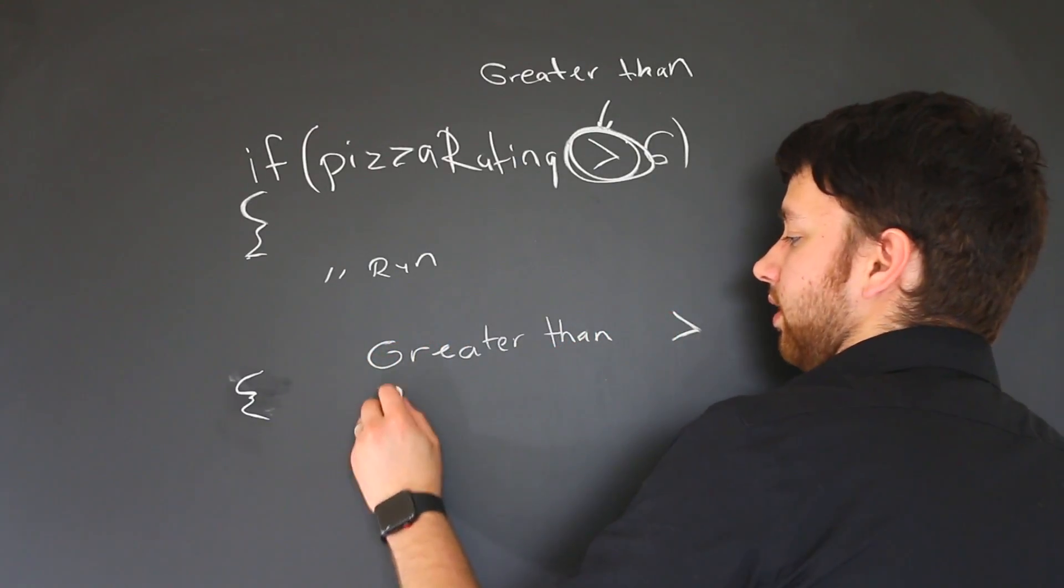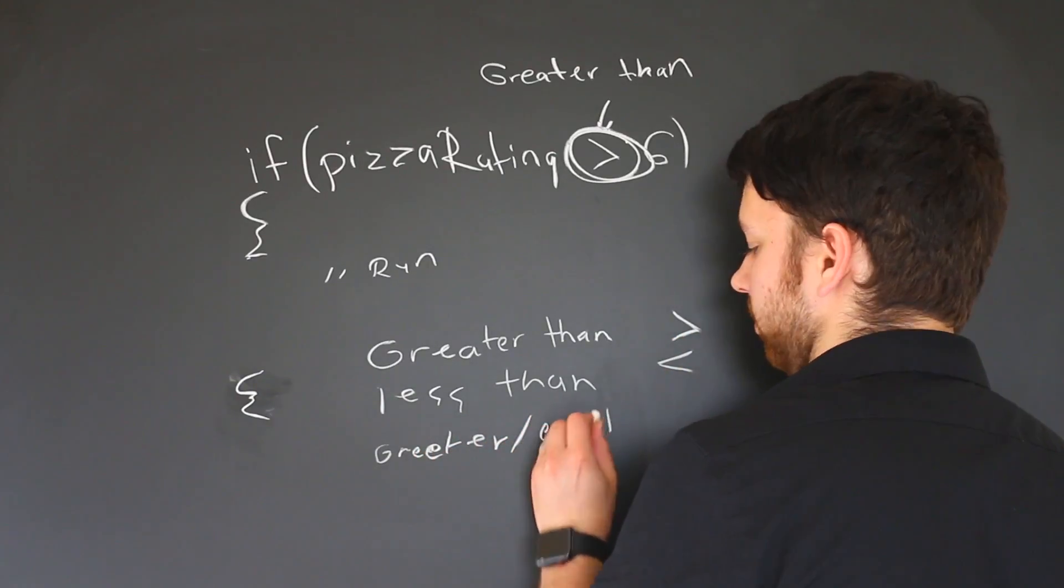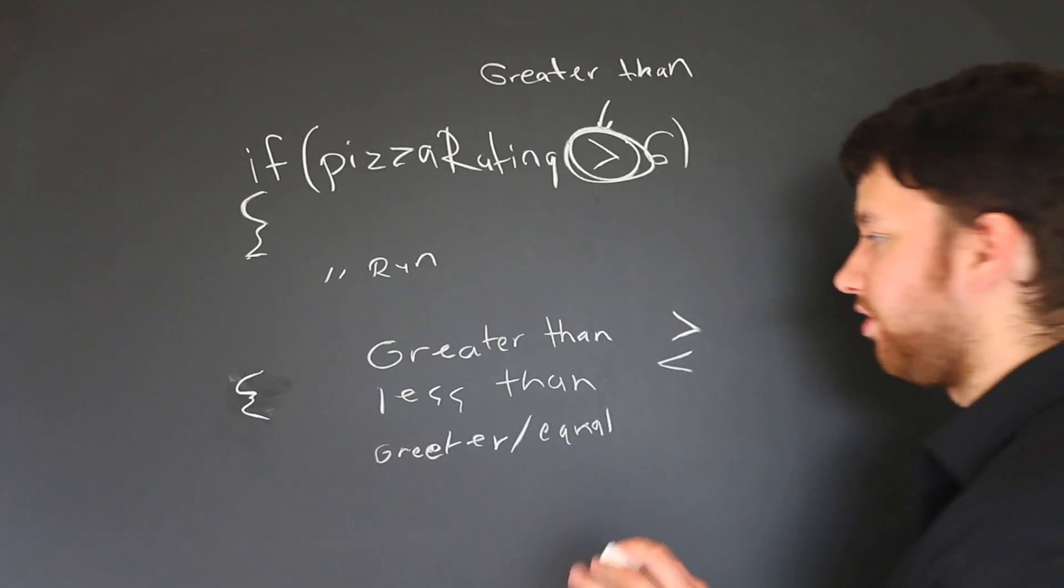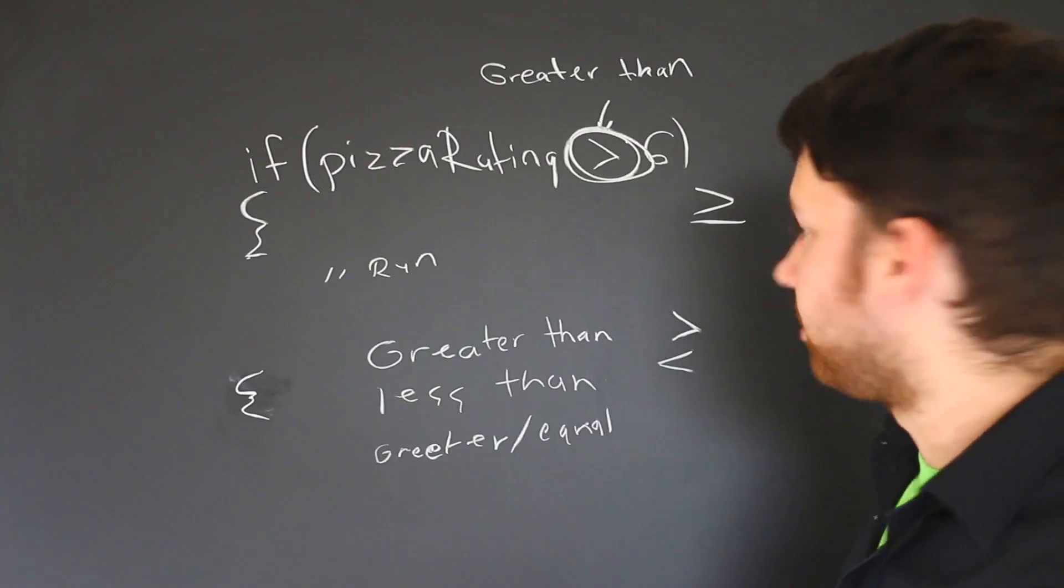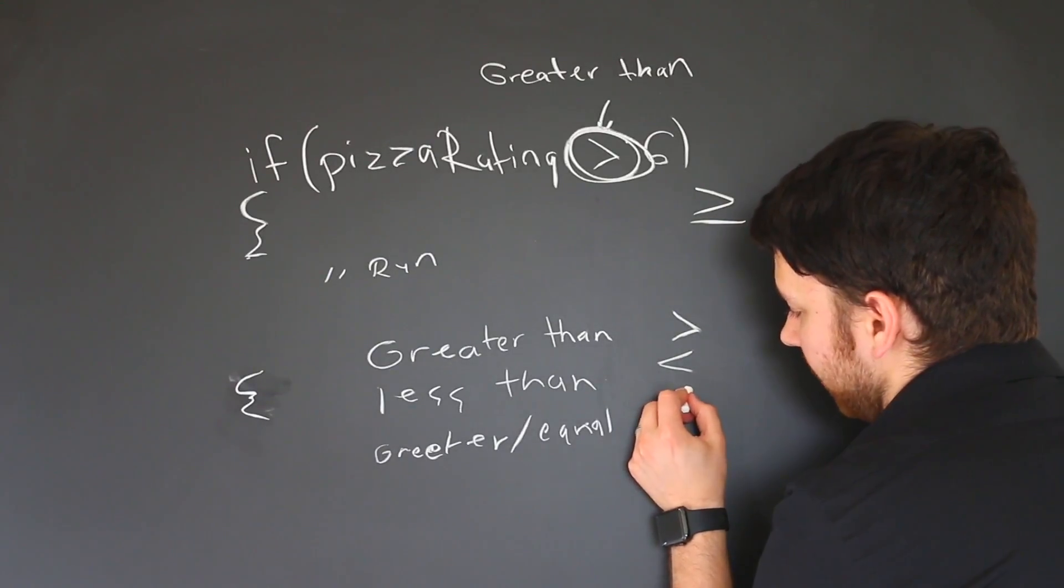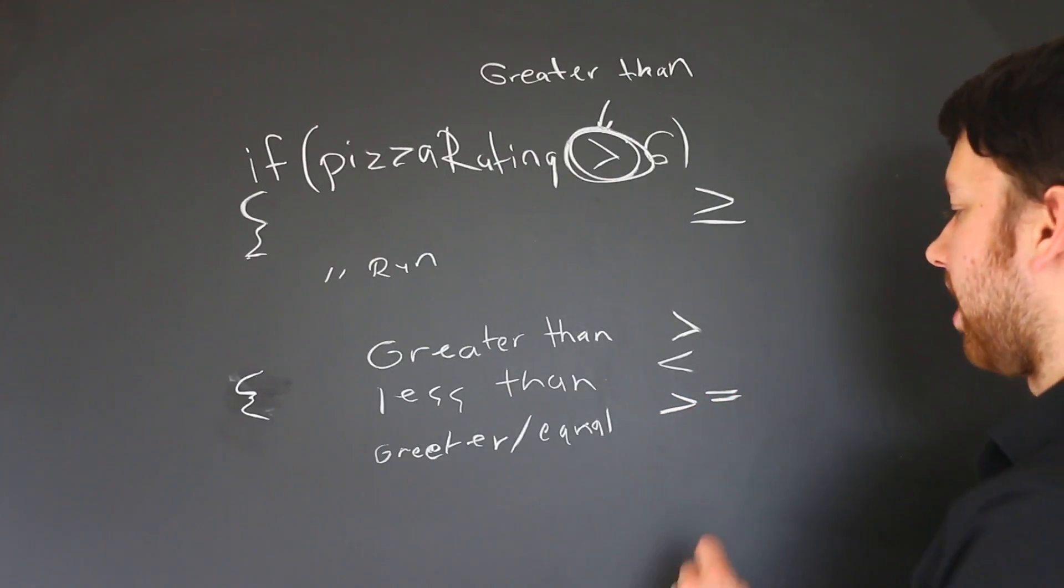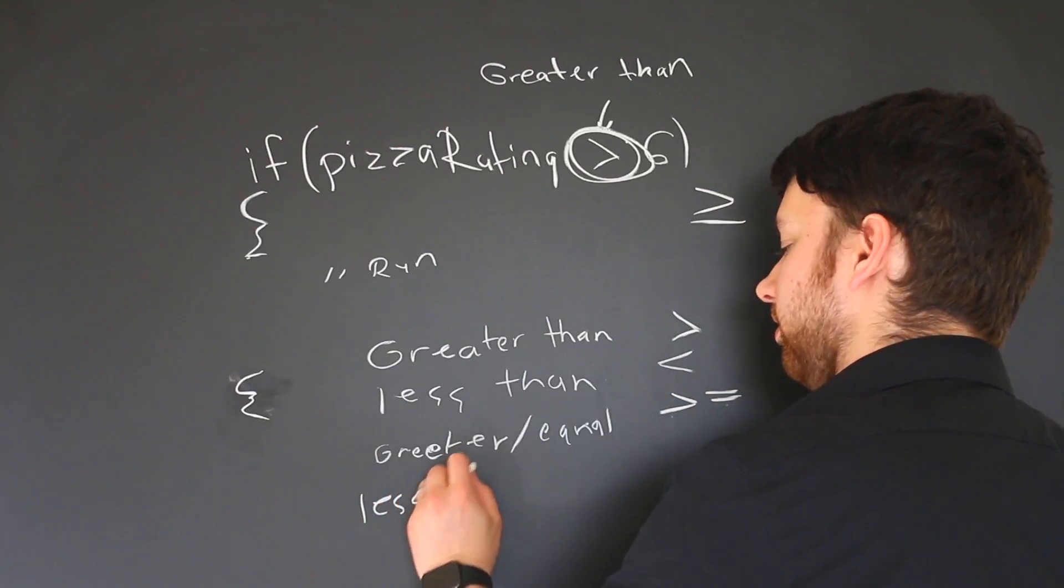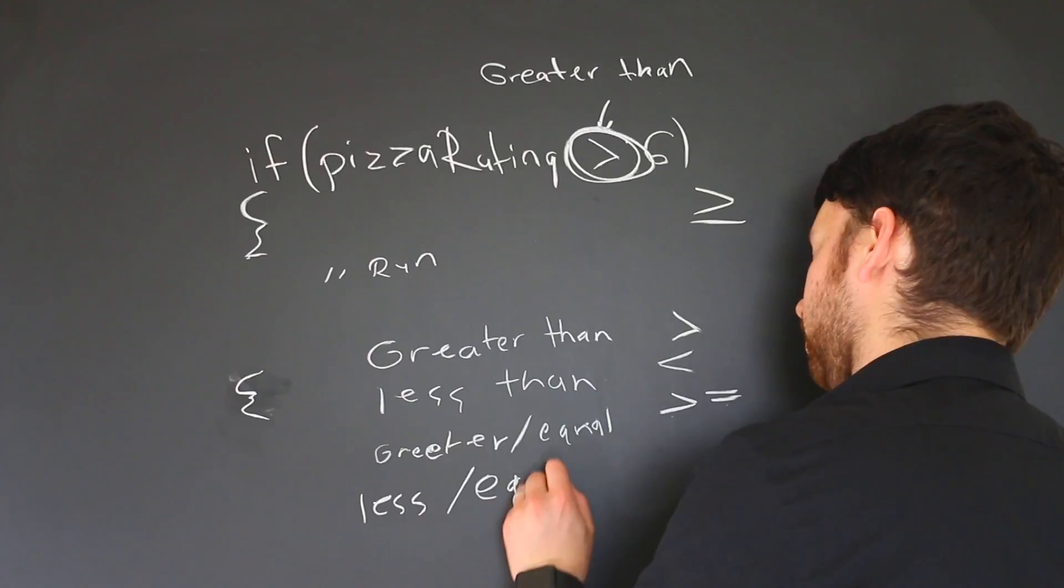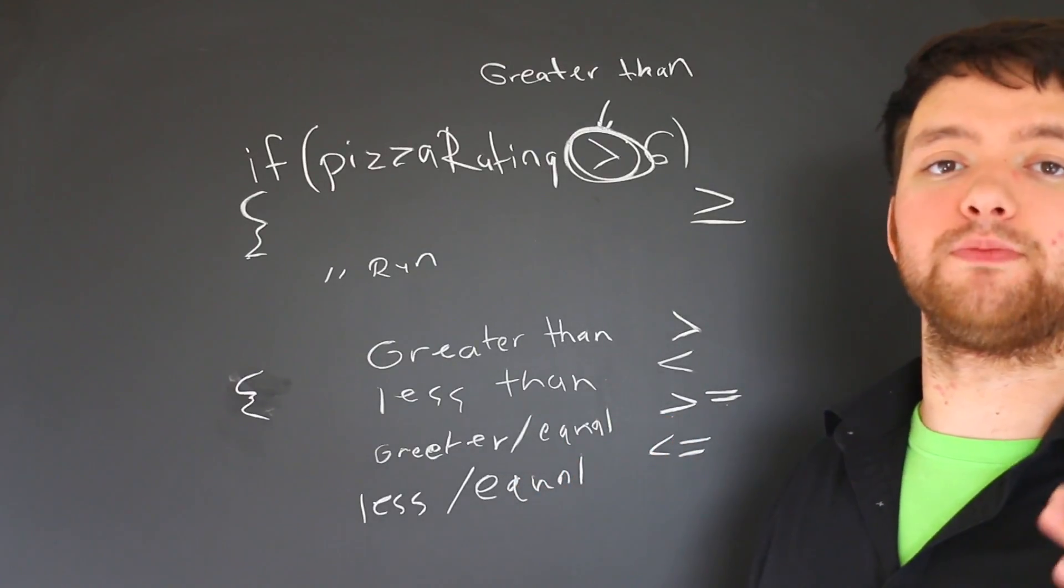So let's get that one first. We have greater than, which looks like that. We have less than, which looks like this. Greater or equal to, and that's actually going to be a little bit different than what you're used to. In math class that would look like greater than or equal to, but in computer science the way that's represented is a greater than and then an equal sign. It kind of reads how it sounds: greater than or equal to. We also have a less than or equal to, which is very similar: less than equals.